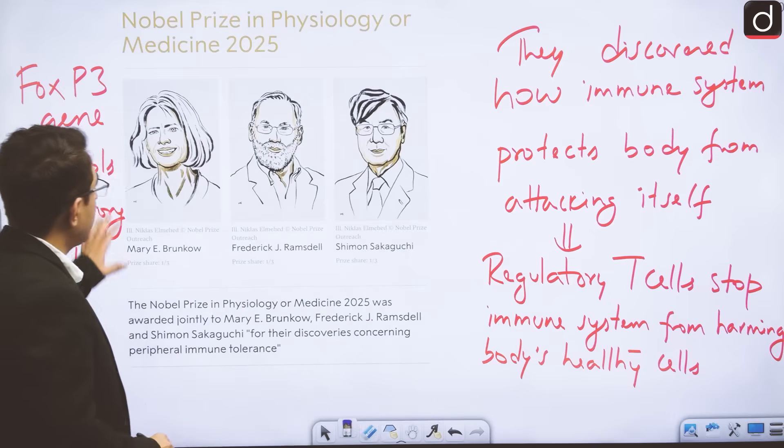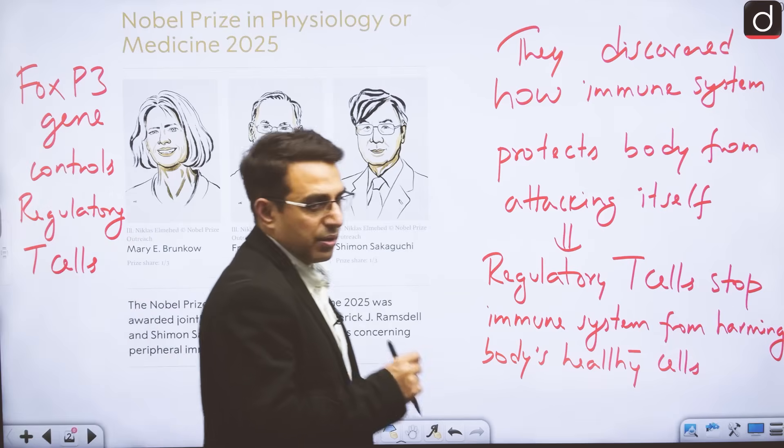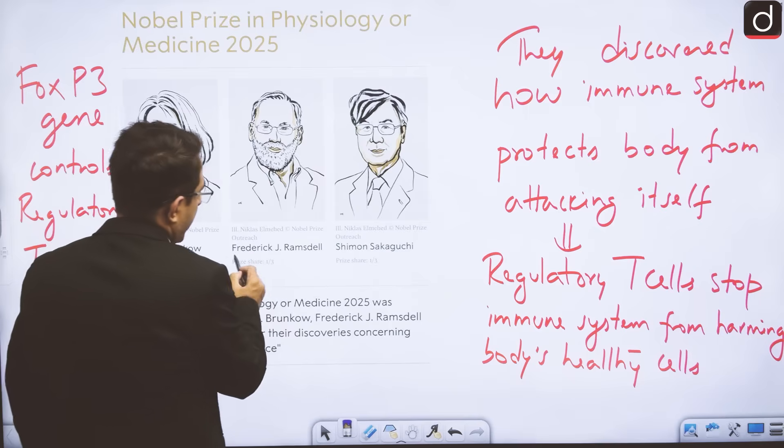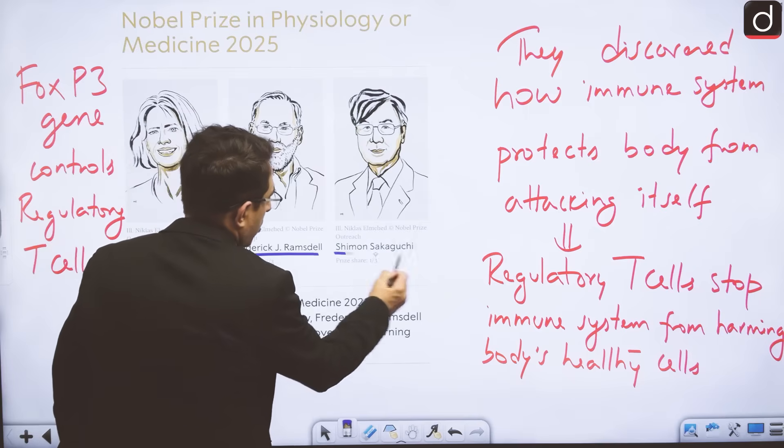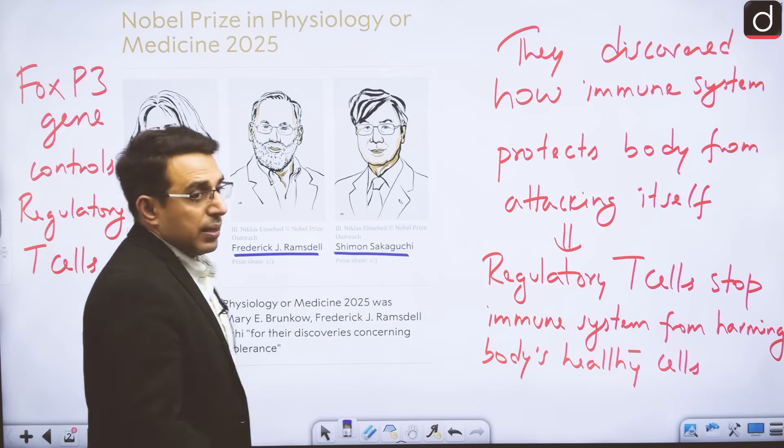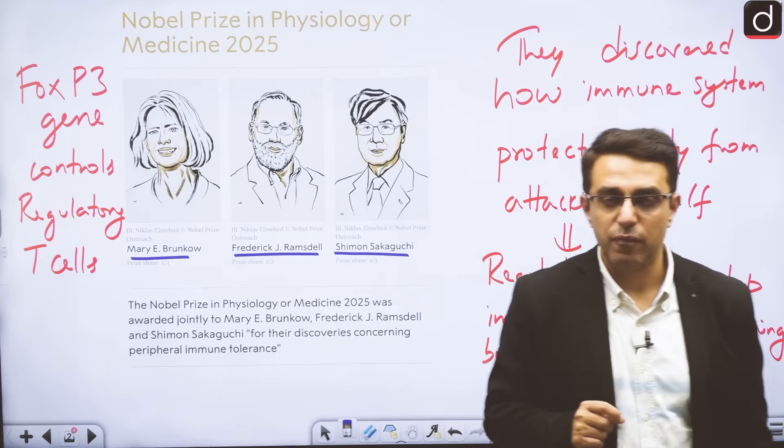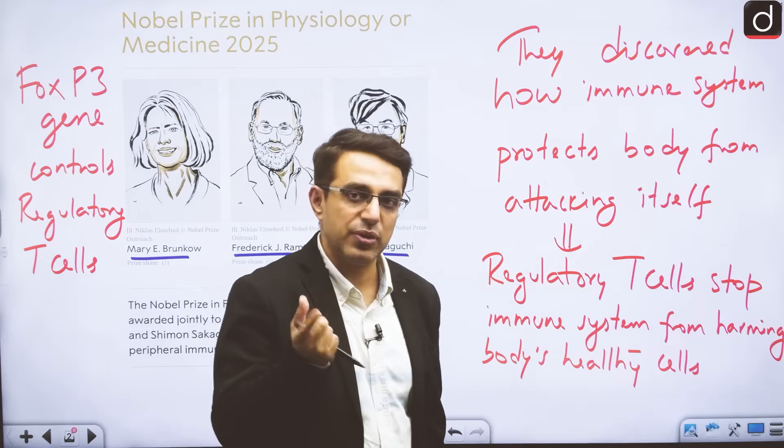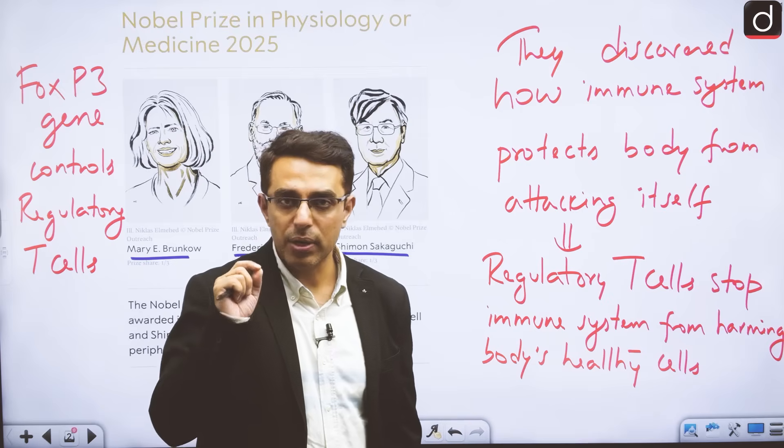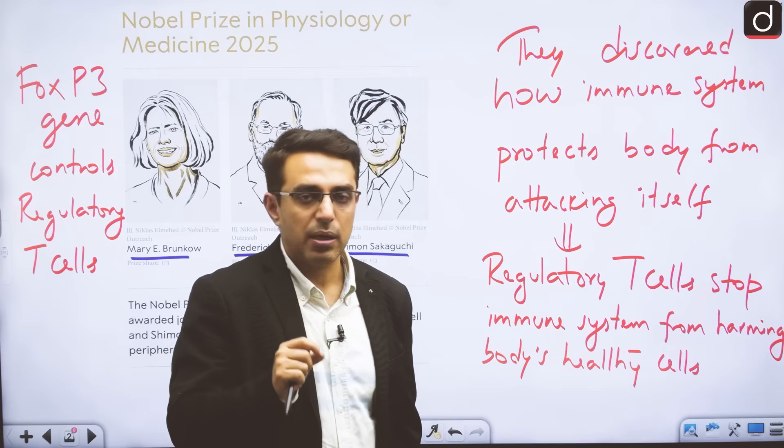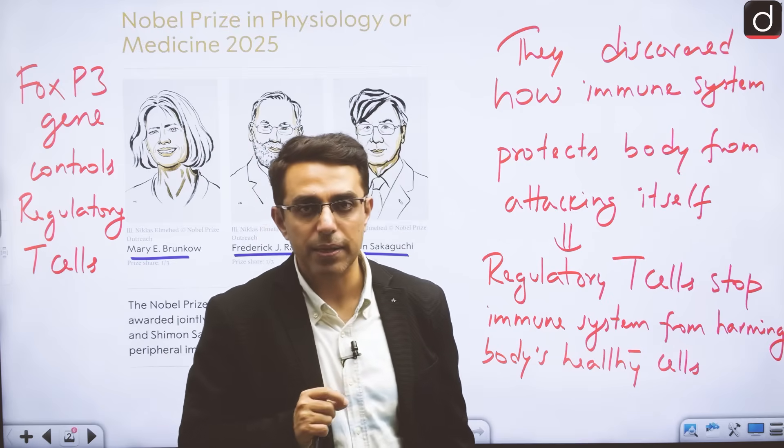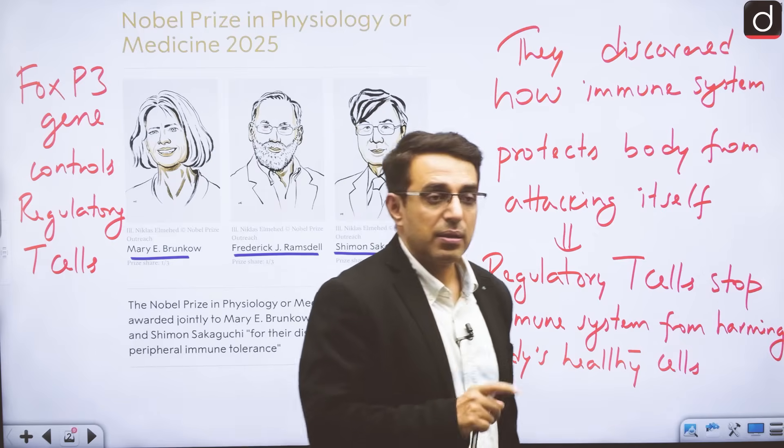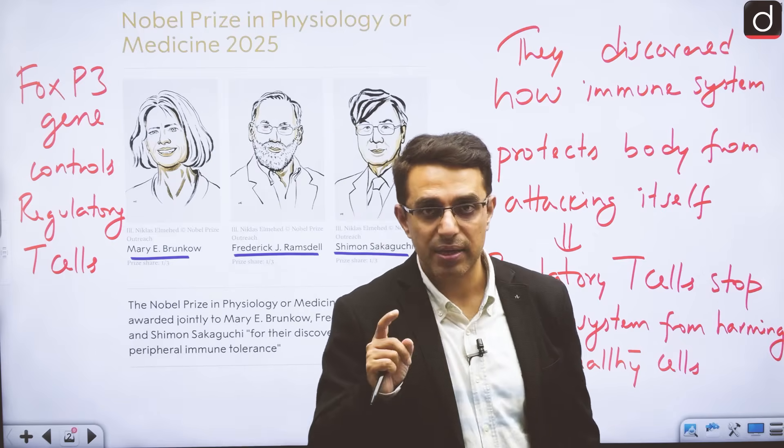Nobel Prize in physiology or medicine has been given to three scientists: Mary Bronco, Patrick Ramstil and Shimon Shakaguchi. The prize in medicine has been given for the discovery of regulatory T cells. Regulatory T cells are connected with our immune system. The immune system of our body protects us from various infections.